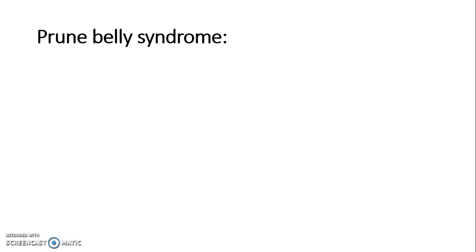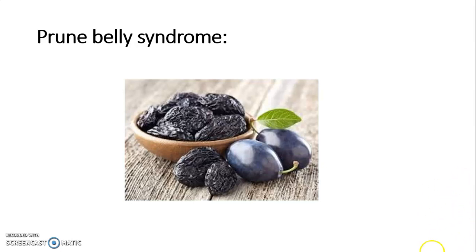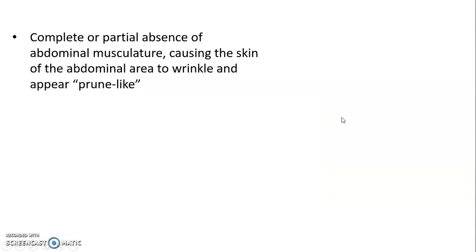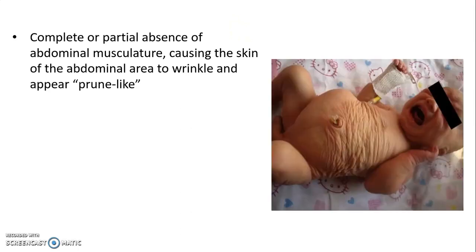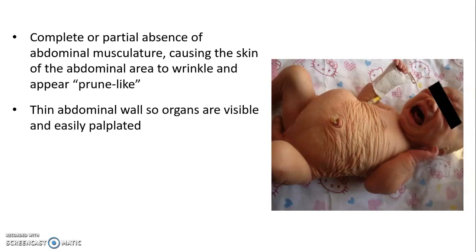Prune belly syndrome — a prune is a dried plum with a wrinkled appearance. In prune belly syndrome, there is complete or partial absence of abdominal musculature causing the skin of the abdominal area to wrinkle and appear prune-like. As seen in the picture, the abdominal skin of the baby is shriveled and wrinkled. The abdominal wall is so thin that organs are visible and can be easily palpated.